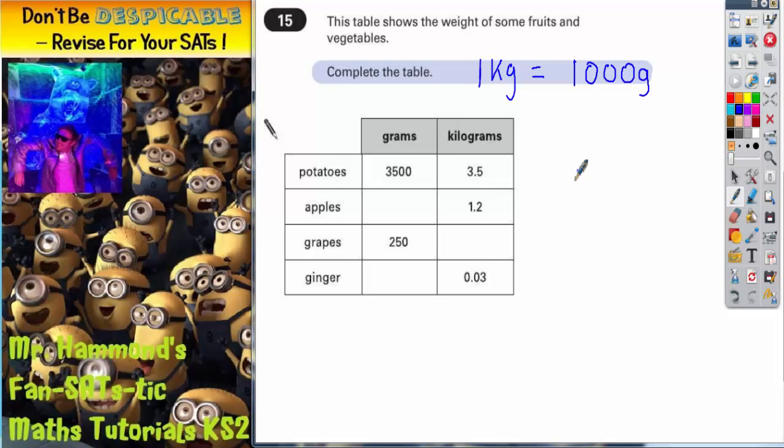So let's start thinking about place value. Well, if we're dealing with kilograms, then in our amounts of kilograms we've got units and tenths in this 3.5, units and tenths in 1.2, and units, tenths and hundredths in 0.03. So we're going from units to tenths to hundredths.